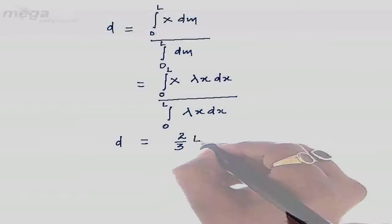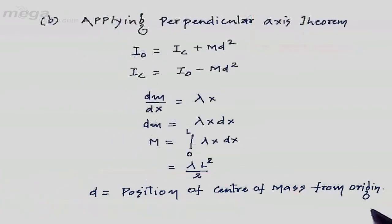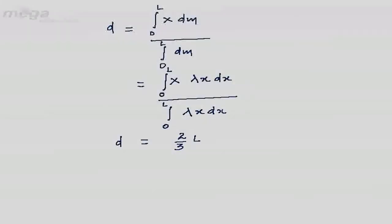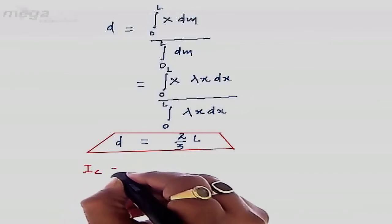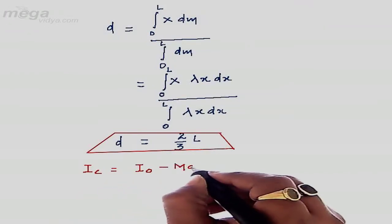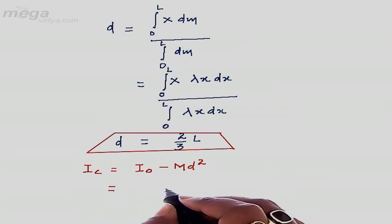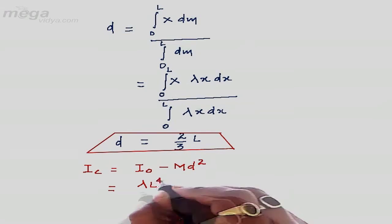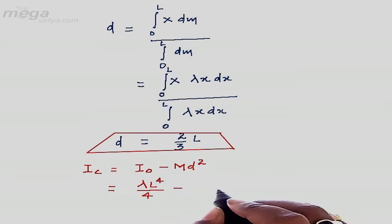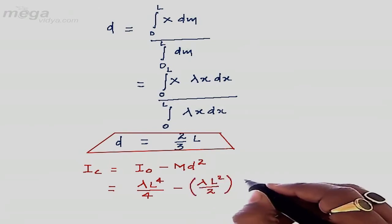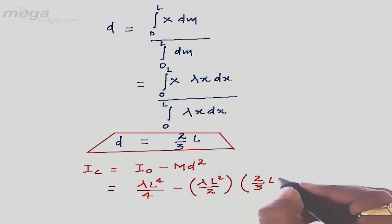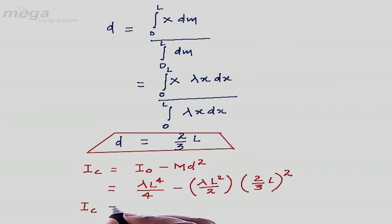The center of mass from the axis of rotation is (2/3)L. Now substituting into the parallel axis theorem: Ic = I₀ − md² = (λL⁴/4) − (λL²/2) × (2L/3)². On calculation, the moment of inertia along the centroidal axis comes out to be (1/36)λL⁴.